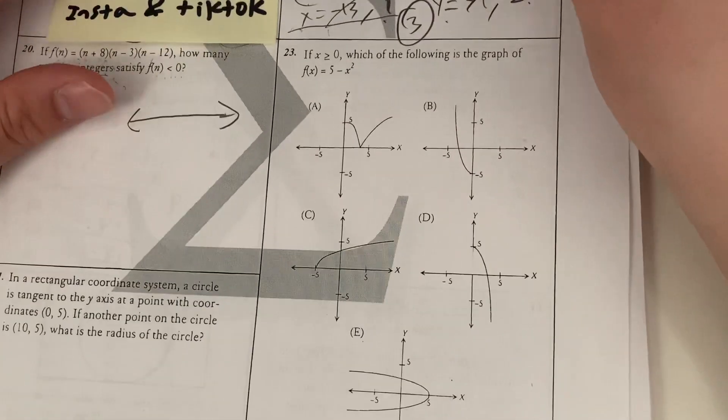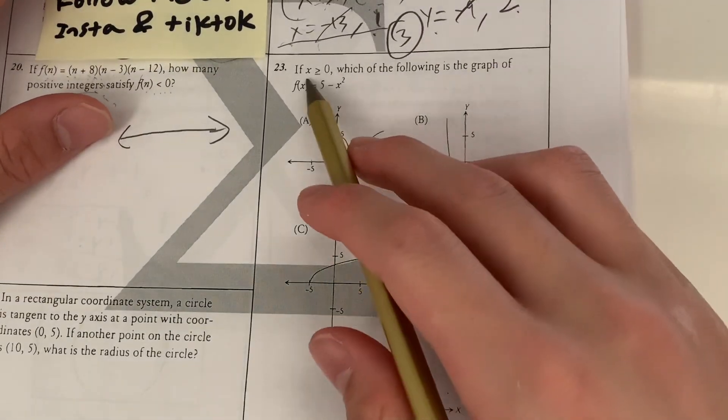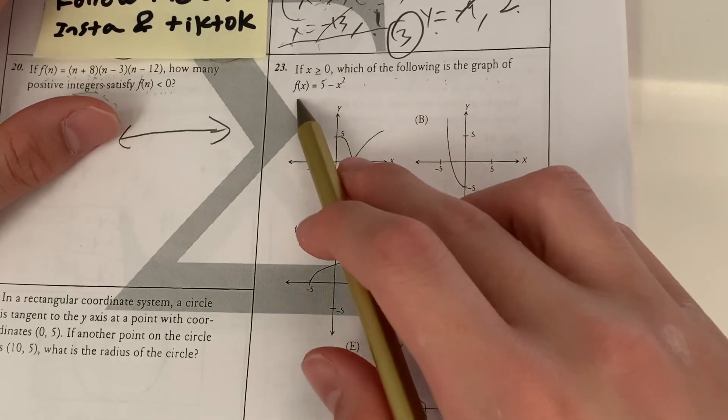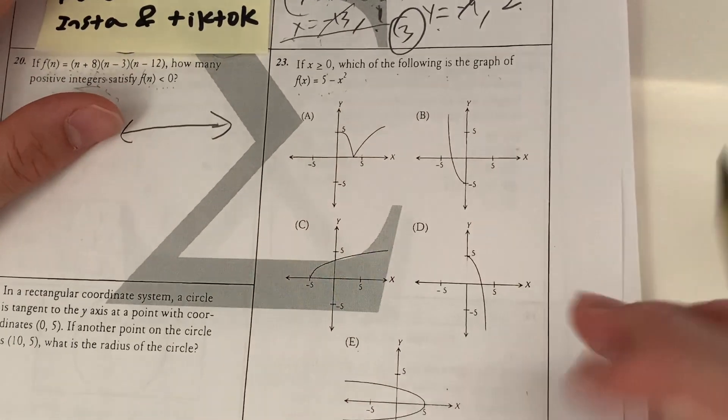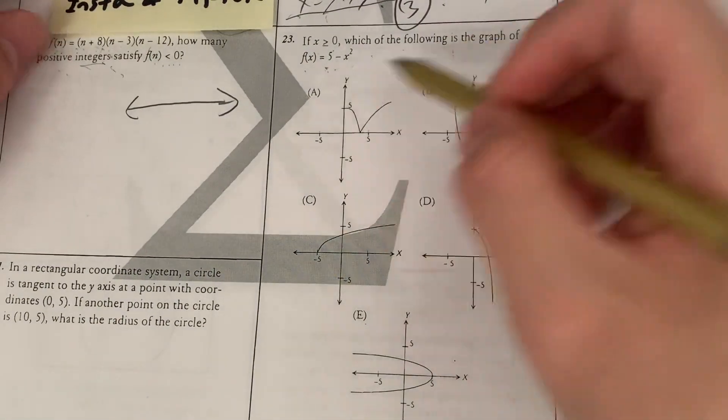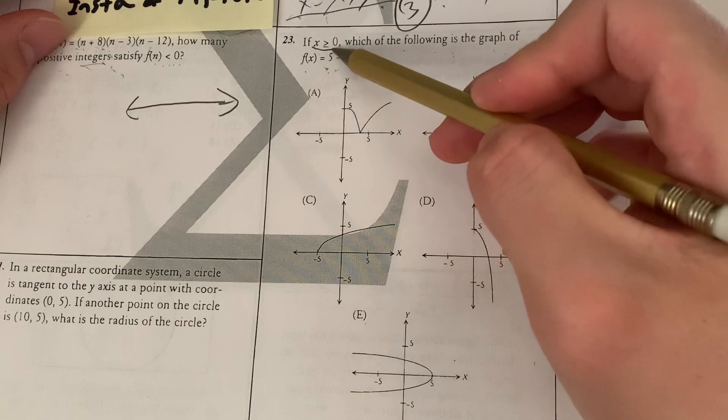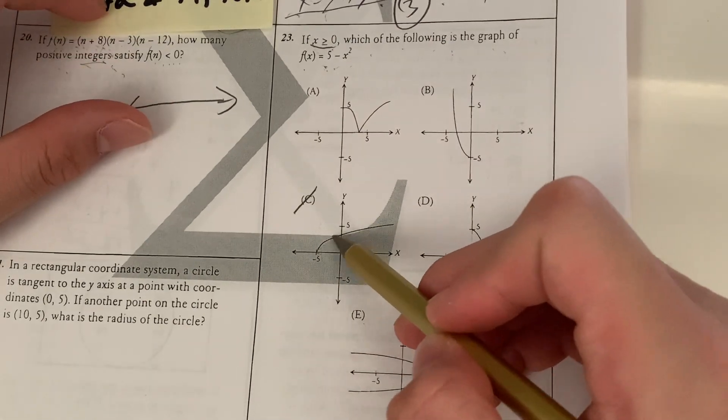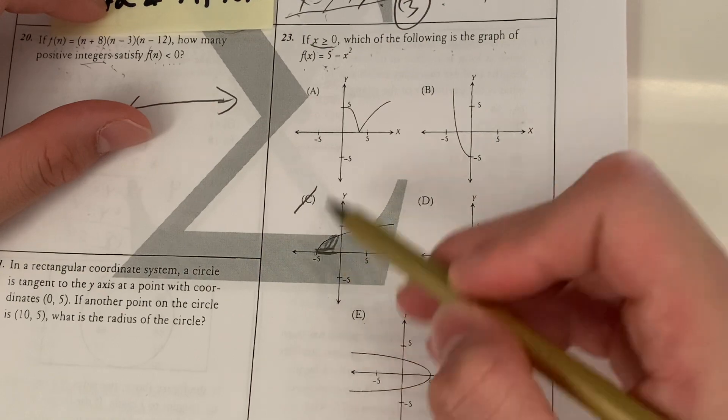So moving on, let's go to question 23. If x is greater than 0, which of the following is the graph of f(x) = 5 - x²? Now looking at these graphs, what will be our graph? Looking at it, x has to be greater than or equal to 0. So that rules out C, because I see that this part is going to be in the negative x. That rules it out.